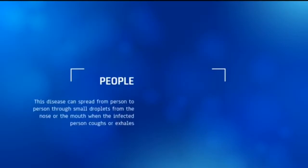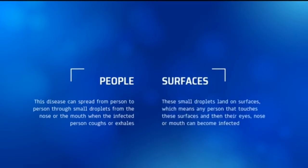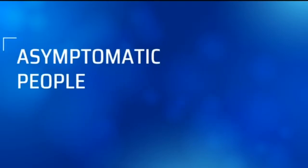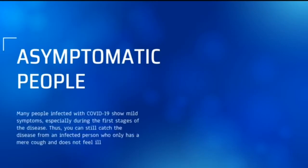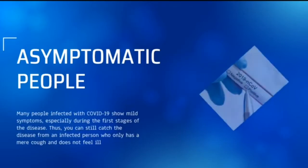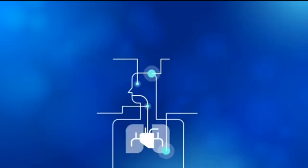This disease can spread from person to person through small droplets from the nose or mouth when an infected person coughs or exhales. These small droplets land on surfaces, which means a person who touches these surfaces and then touches their eyes, nose, or mouth can become infected. Many people infected with COVID-19 show mild symptoms, especially during the first stages of the disease. You can still catch the disease from an infected person who only has a mild cough and doesn't feel ill.